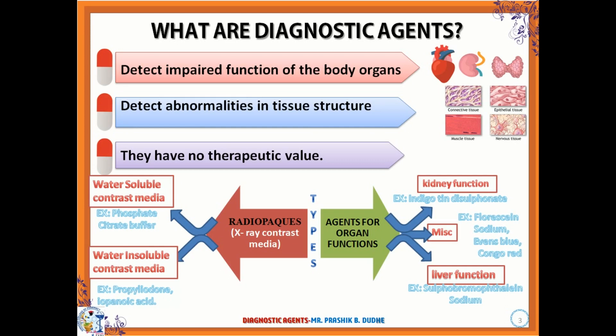Diagnostic agents are agents which are used to detect impaired function of body organs like kidney, heart, thyroid gland, urinary gland, and so on. These agents also help in detecting abnormalities in tissue structure like epithelial tissues, muscular tissues, and nervous tissues. These agents do not have any therapeutic or pharmacological action of their own — they are only utilized for detection purposes. These agents are divided into two types: radio opaque or x-ray contrast media, and agents for organ function test.